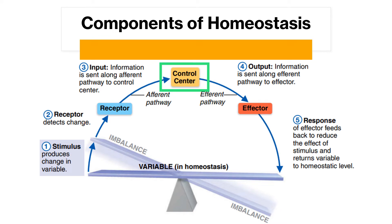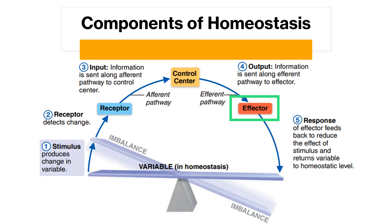The control center determines the level at which a variable is to be maintained; it analyzes the information it receives and determines the appropriate response. The third component is the effector, which provides the means of the control center's response to the stimulus. Information flows from the control center to the effector along the efferent pathway. The result of the response then feeds back to influence the stimulus, either by reducing the change — called negative feedback — or by increasing the change so the reaction continues at an even faster rate — called positive feedback.